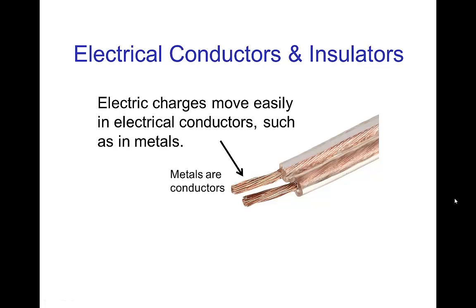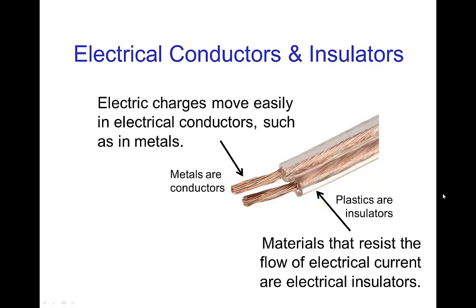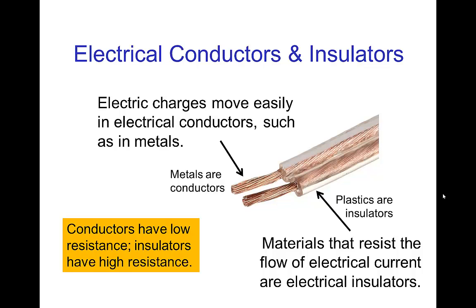Continuing with this water analogy, the pipes that carry the current in a circuit would be the conductors. Electrical charges move easily in electrical conductors, and the most common type of conductors are metals, so the electrons move very easily in a metal. There are also insulators — an electrical insulator is a material that resists the flow of electrical current.